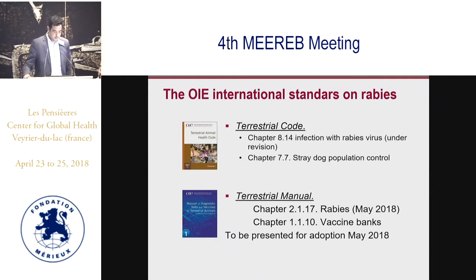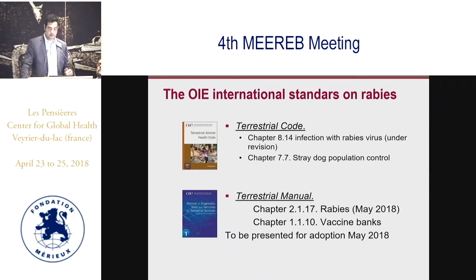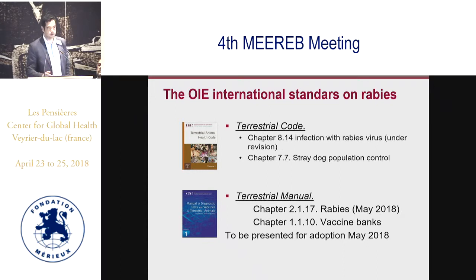For rabies, there are two sets of standards: the Terrestrial Code and the Terrestrial Manual. In the Terrestrial Code, we look at chapter 8.14 on rabies, which is currently under revision and was circulated to member countries in February. Comments are expected before July 2018. There is also chapter 7.7 on stray dog population control, which is one of the two backbone chapters for rabies standards.